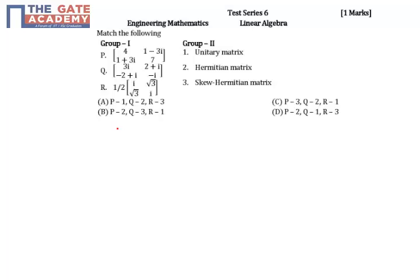For a unitary matrix, when we have a matrix A, then A into A-conjugate whole transpose is equal to I. If a matrix satisfies this equation, then we can say that A is a unitary matrix.